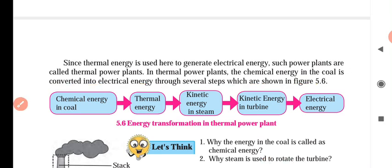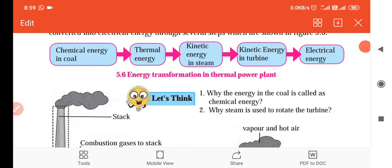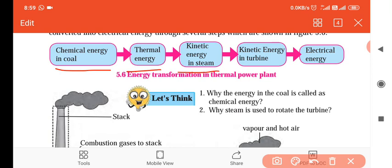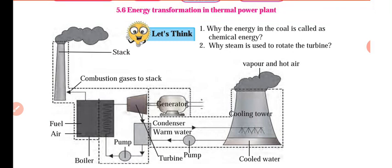The chemical energy in the coal is converted into thermal energy. The thermal energy becomes kinetic energy in the steam. The kinetic energy of the steam rotates the turbines. The turbines then drive the generator, and electrical energy is produced. The energy source in the coal is called chemical energy.